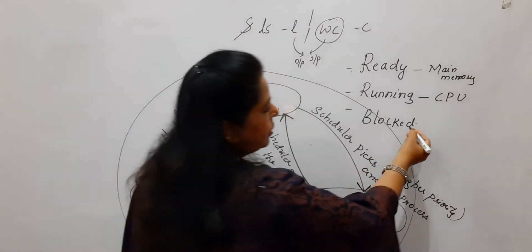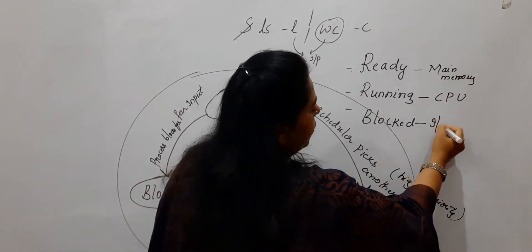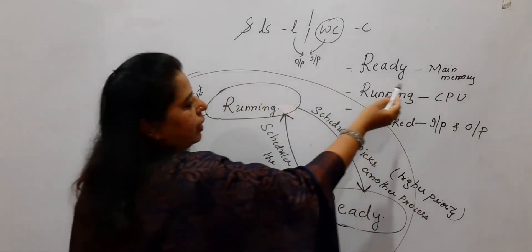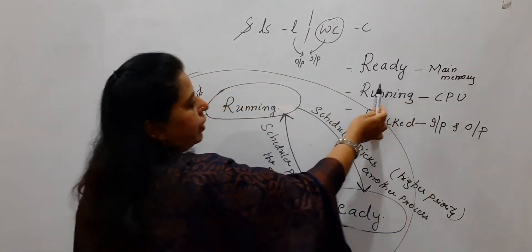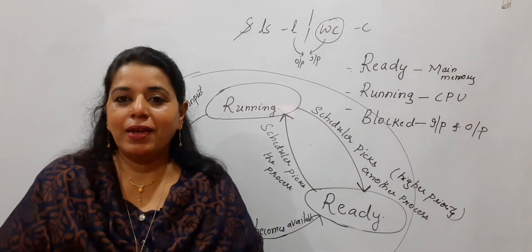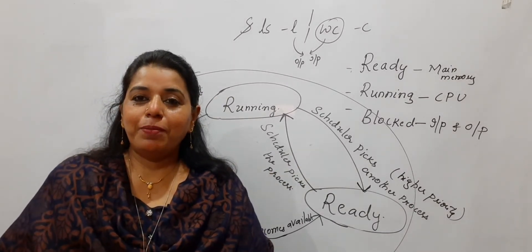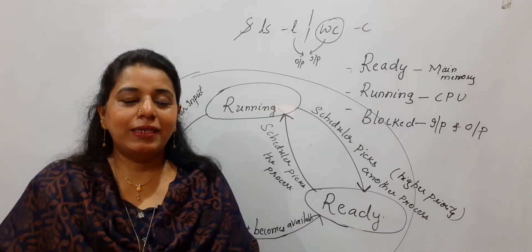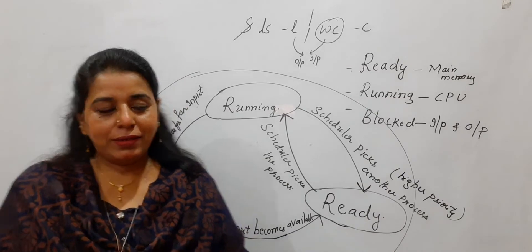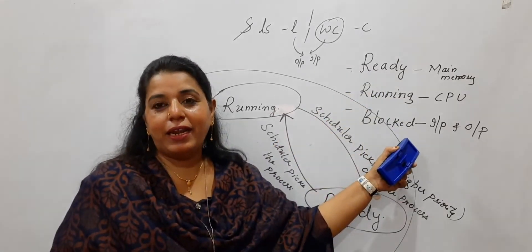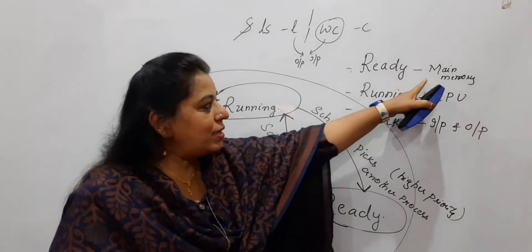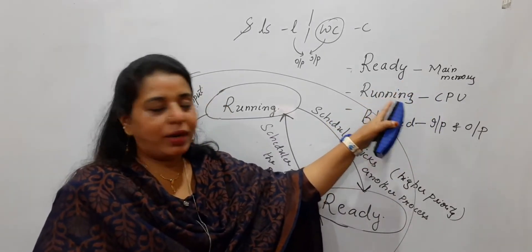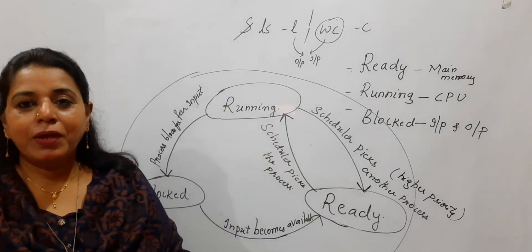You can relate the different parts of the computer to the different states of a process. Students learn from school that the parts of a computer are CPU, memory, and input/output devices. Now looking at the process state diagram: memory maps to the ready state, CPU maps to the running state, and input/output devices map to the block state.